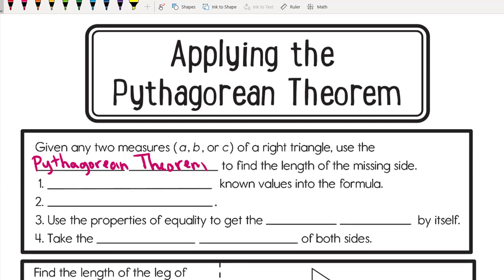To find the length of the missing side, the first step is to substitute what we know into the formula a squared plus b squared equals c squared. Then we simplify or evaluate what we have so far. Use the properties of equality to get the unknown variable by itself, and then we will take the square root of both sides as our final step.